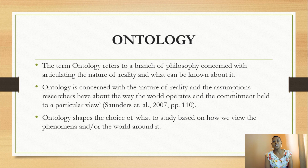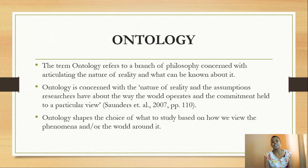The second assumption is ontology. Ontology refers to the nature of reality and what can be known about it. Ontology concerns the assumptions researchers have about the world their phenomena operates in and the commitments they hold regarding a particular view. Ontology shapes the choice of what to study based on how we view the phenomena and the world around it.